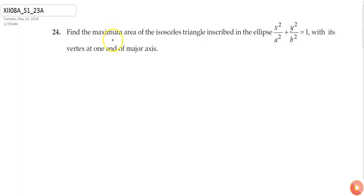In this question we need to find the maximum area of an isosceles triangle inscribed in the ellipse x²/a² + y²/b² = 1, with its vertex at one end of major axis. First we shall draw the ellipse on xy-plane.